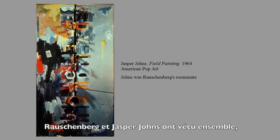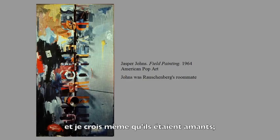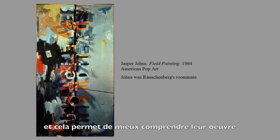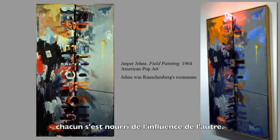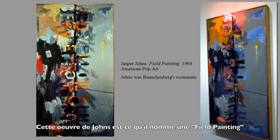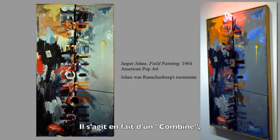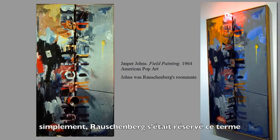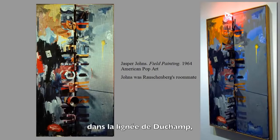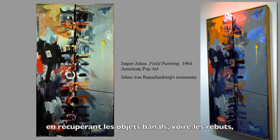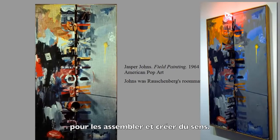Rauschenberg and Jasper Johns were roommates, and I think they were actually lovers in New York during the 1950s. That's going to be important in understanding their art because in some ways they fed off of each other. Jasper Johns is making what's called a field painting — it's a combine, though I don't think he called his work combines the way Rauschenberg did. But he is doing the same thing — taking things from popular culture or the trash stream and recombining them to make a meaning.